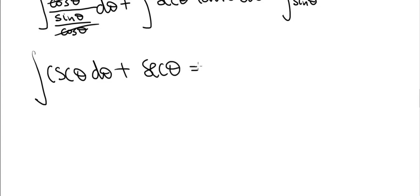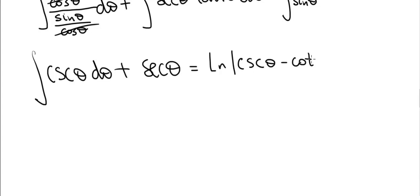The integral of cosecant is something you may have derived in an earlier video — it is done the same way as the integral of secant. It equals ln|csc(θ) − cot(θ)|. So our full antiderivative is ln|csc(θ) − cot(θ)| + sec(θ).